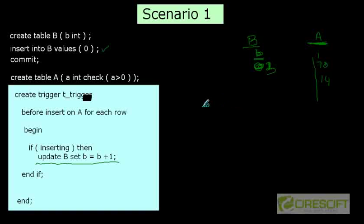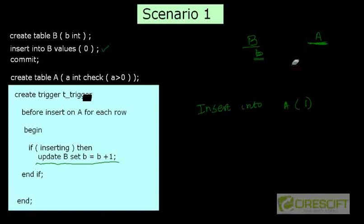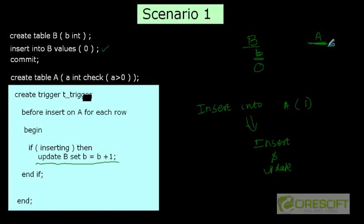So given this scenario, let's figure out what happens if we do insert into A with value one. Initially table A has nothing, and the value of B is zero. When I try to insert into A the value one, this leads to an insert into A and also an update to table B. So one is inserted into A and the value of B becomes one.